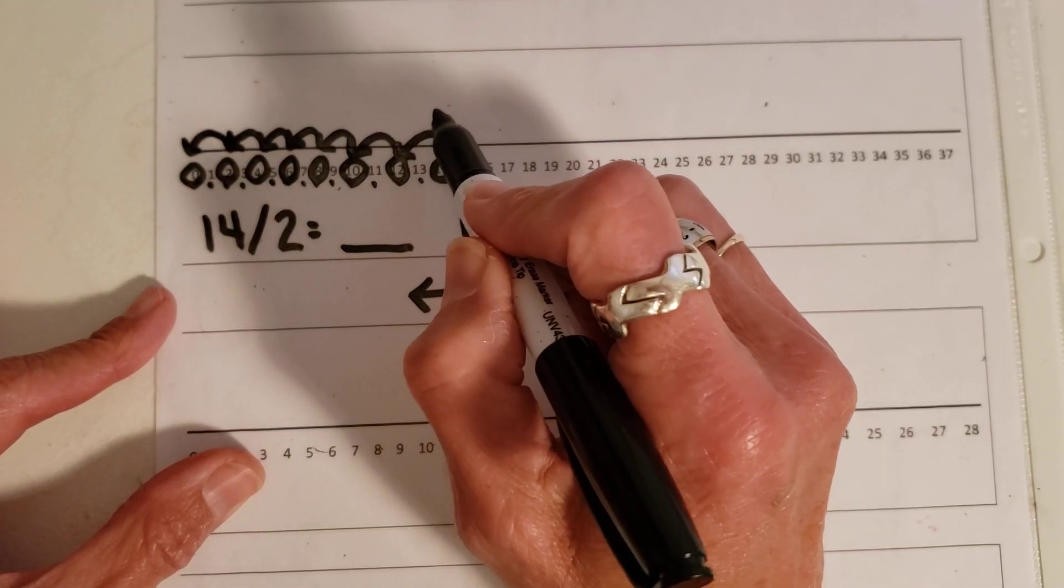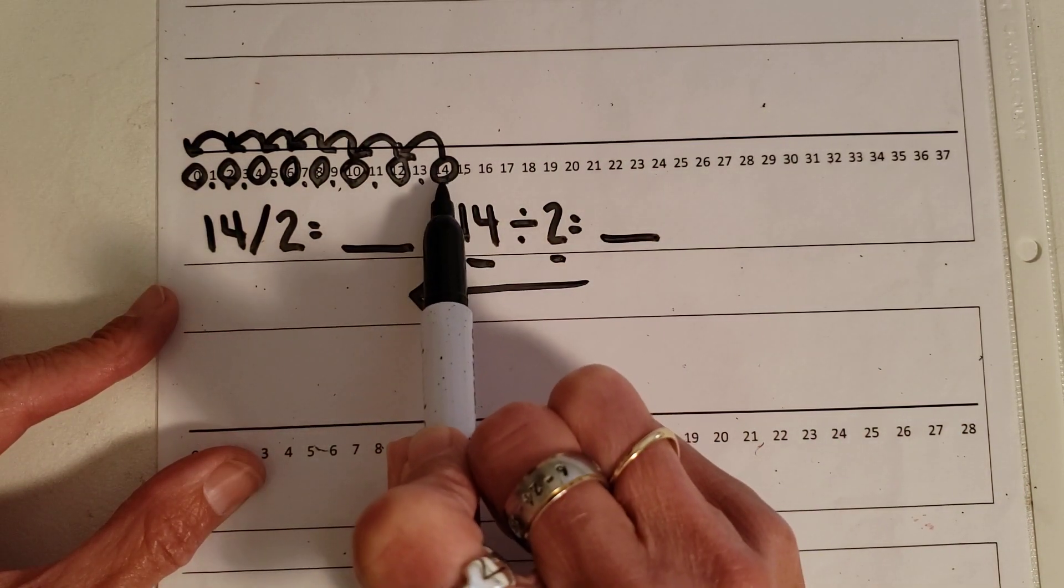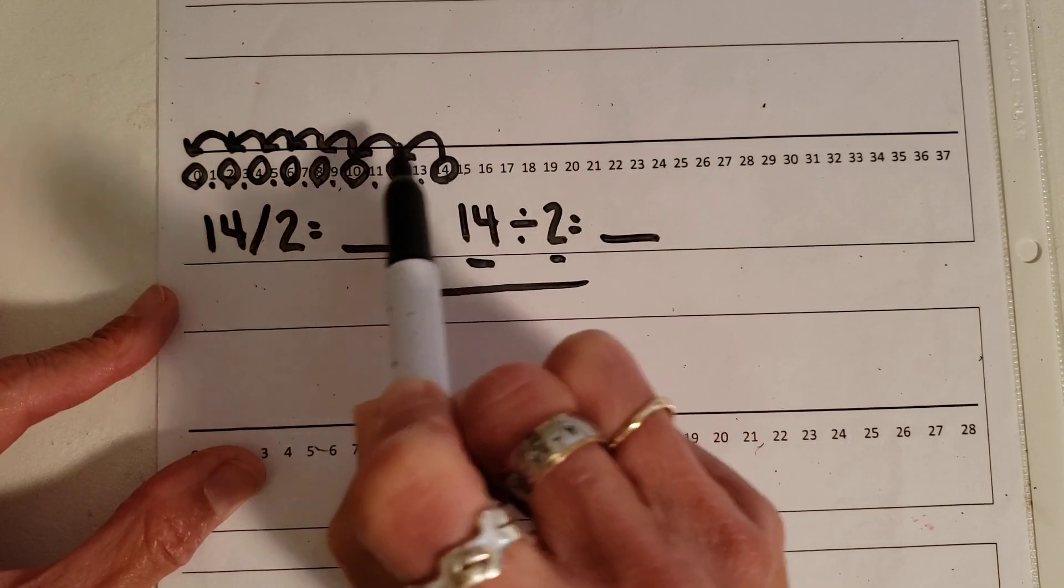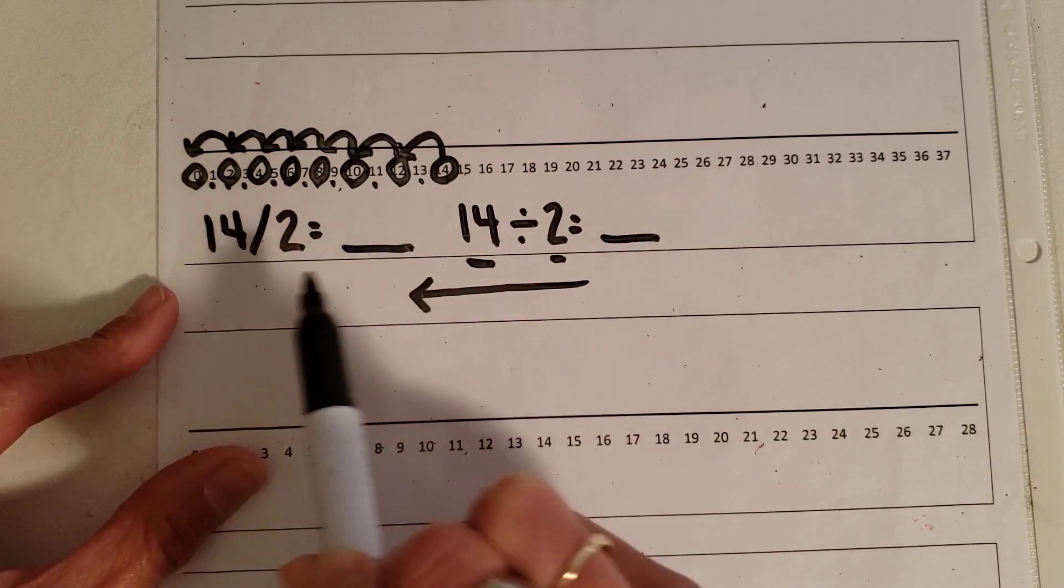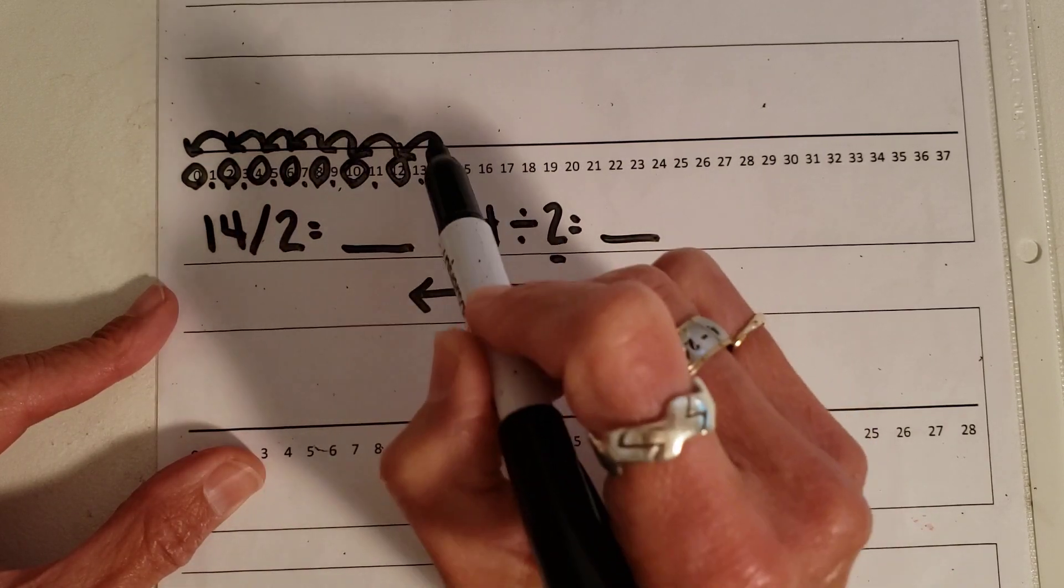So I'm going to count my hops because I have taken the total of 14 and I hopped back 2 each time. So now I want to find out exactly how many hops did I make. So I'm going to count them.